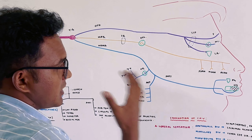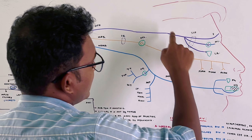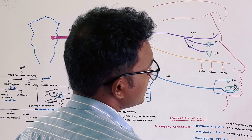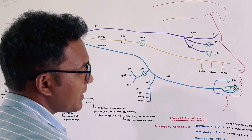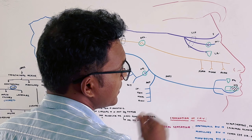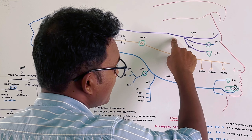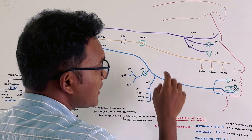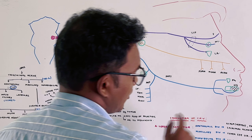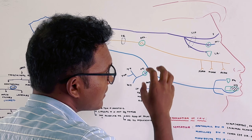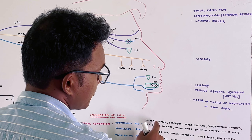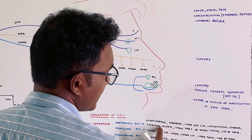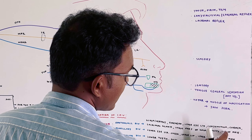For the sensory examination, I need to check touch, pain, and temperature for each division. For the ophthalmic division, sensation is checked over the scalp up to the vertex, forehead, upper eyelid, conjunctiva, cornea, lacrimal gland, upper part of the nasal cavity, and the tip of the nose.